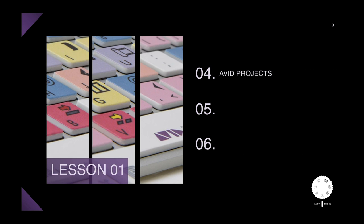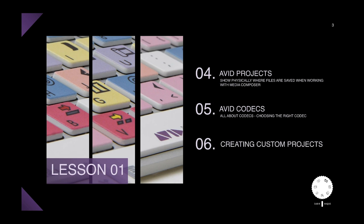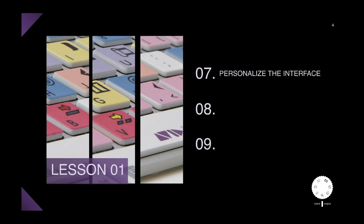After that we're going to cover Avid projects, which is very essential because it gives you a much better idea about what kind of media you're bringing in and what kind of output you want. We're going to look at different project types, how to choose the right project for your footage, and how to create a custom project where you can define the raster size and frame rate. We'll also cover how to personalize your interface, give it a custom look, and map user buttons — button re-assignments from menu to your keyboard.